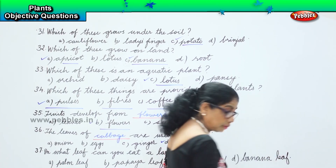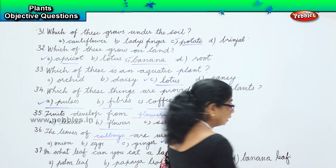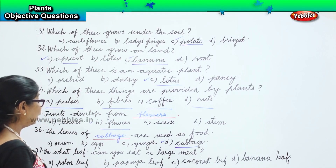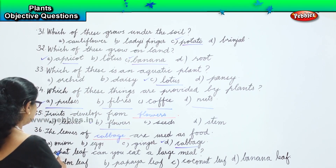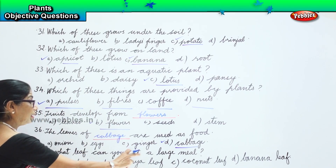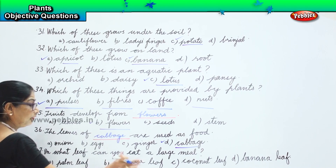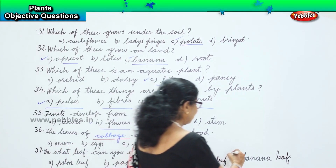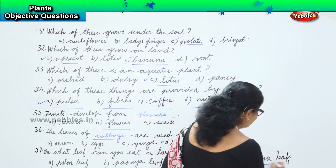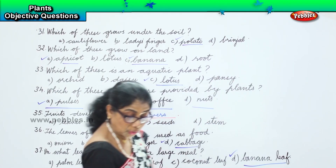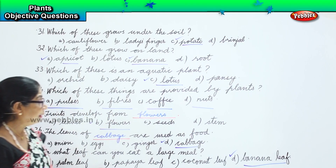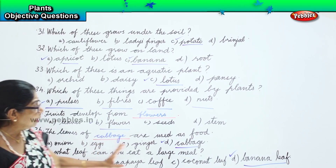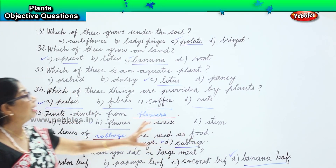Banana leaves are huge and you can cut into bits and have your grand large meal. So, on what leaf can you eat a large meal? Not a palm leaf, not a papaya leaf, not a coconut leaf. The answer is Option D: banana leaf. Banana leaves are long and nice and also medicinal.